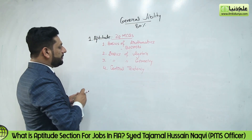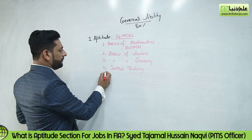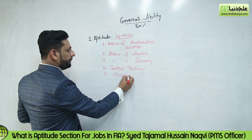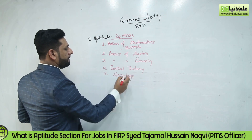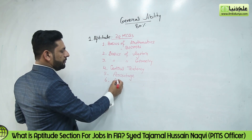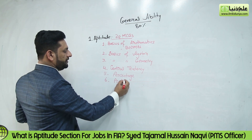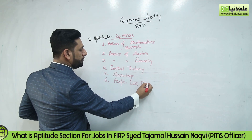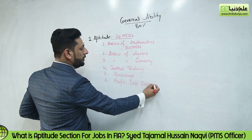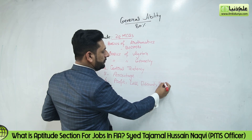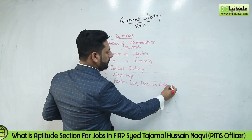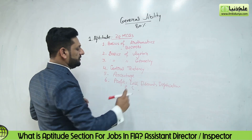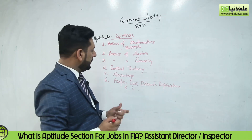Then we have number 5: Percentage. Number 6: Profit, Loss, Discount, and Depreciation. These make up the 6th number — the aptitude value section.